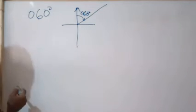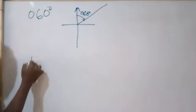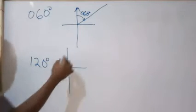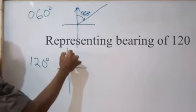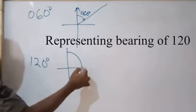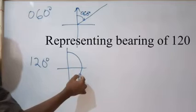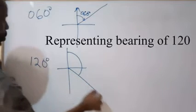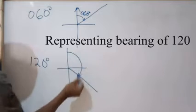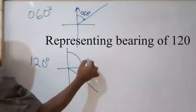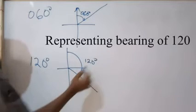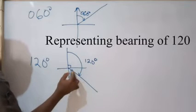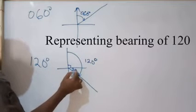If I want to represent 120 degrees, I'll start from the north and move past 90 — somewhere here — because from north going past east to south is 180. I'll draw. This whole angle here is 120 degrees, and I want you to learn that this can be broken down as 90 plus 30.